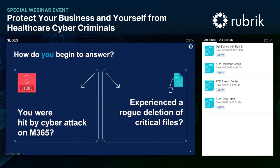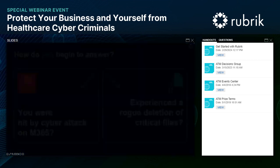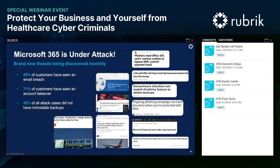What would happen if your Microsoft 365 data was hit by ransomware or another malicious attack, or if you experienced a rogue deletion of critical files? There are new threats to Microsoft 365 being discovered all the time, especially exploiting vulnerabilities and phishing attacks. Despite many organizations having experienced email breaches or account takeover (ATO) attacks, in almost half of all cyber attack cases the organization didn't have an immutable — meaning reliable and unable to be manipulated or deleted — backup to restore from. That's a huge problem when trying to recover.